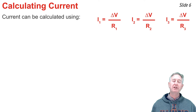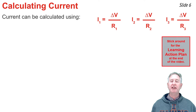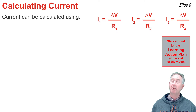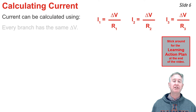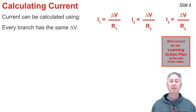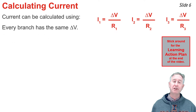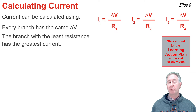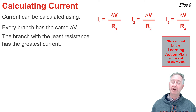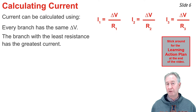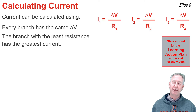One can calculate the current using the relationship ΔV = I × R, rearranged as I = ΔV / R. The ΔV is the same for every branch — it's simply the voltage of the battery. The R varies branch to branch. The branch with the smallest resistance will have the greatest current, and the branch with the largest resistance will have the smallest current.